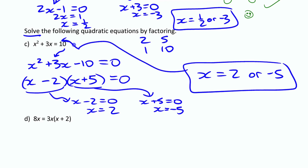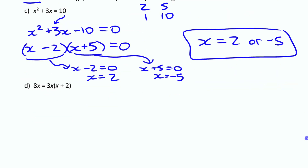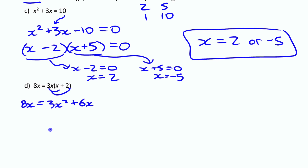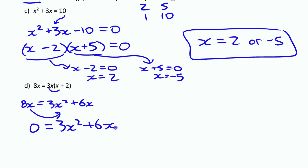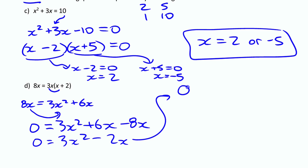The last example looks more complicated — x appears in many places. We need everything on one side with zero on the other, and all brackets expanded. The equation already has a factored form on one side, but there's an 8x on the other side, so we have to expand: 3x² + 6x. Bringing the 8x to the other side gives 3x² + 6x - 8x, which simplifies to 3x² - 2x equals zero.